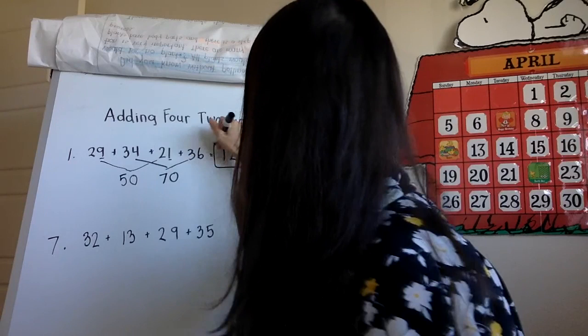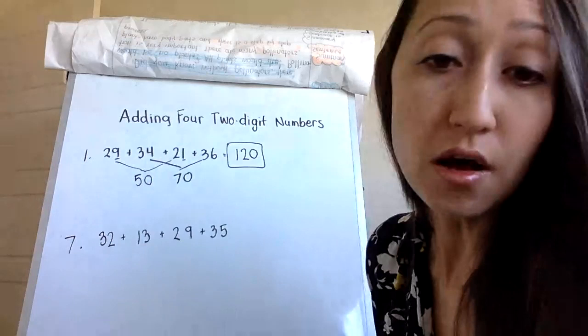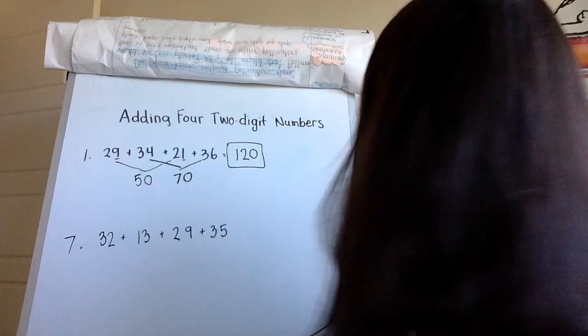When you are doing the worksheet, you're going to come across some problems like number 7. Number 7 is a bit trickier because the friendly pair is not as obvious. Let me show you why. I have 2 ones, 3 ones, 9 ones, and 5 ones, and none of those combinations makes a ten.